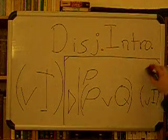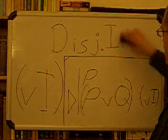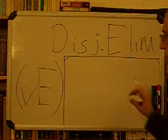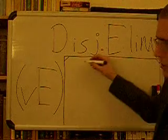Next we'll do the disjunction elimination — disjunction E. It's a little bit stickier than the other one we had. This one is actually going to have six lines for the rule.